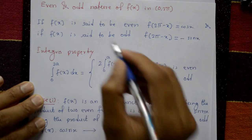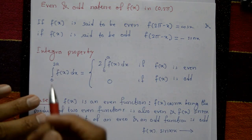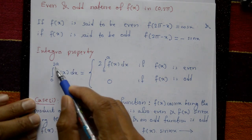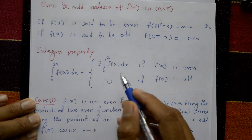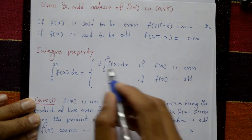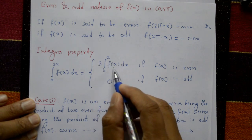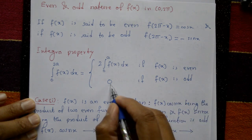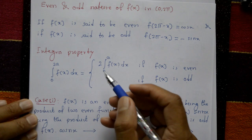This is a property: the integration of 0 to 2a of f(x) dx equals 2 times the integration of 0 to a of f(x) dx if the function is even, and equals 0 if the function is odd. These are the two cases for the interval 0 to 2π.